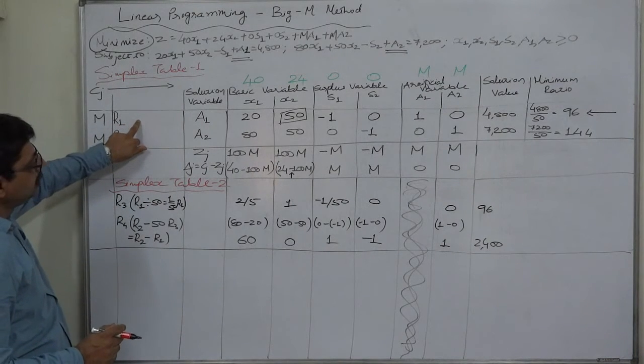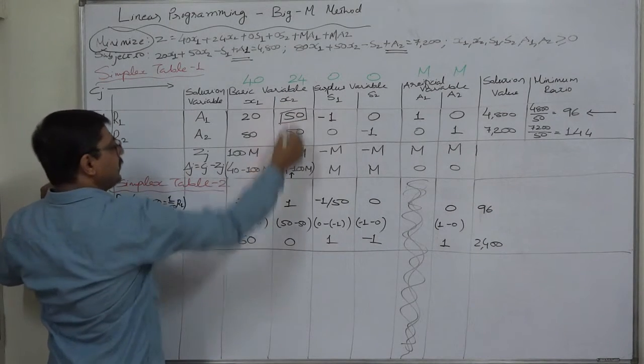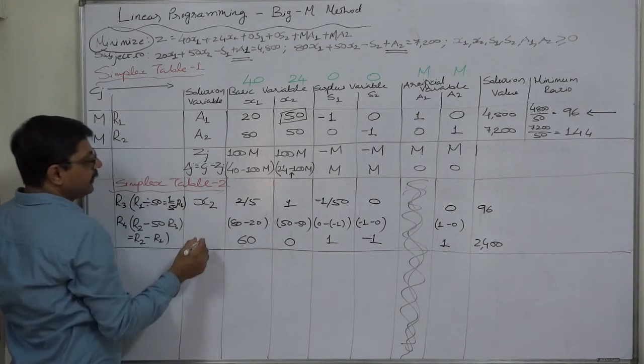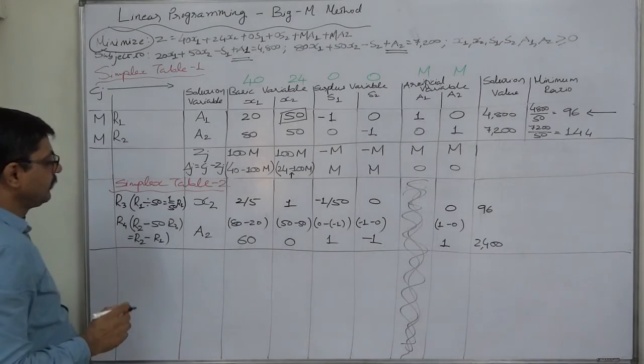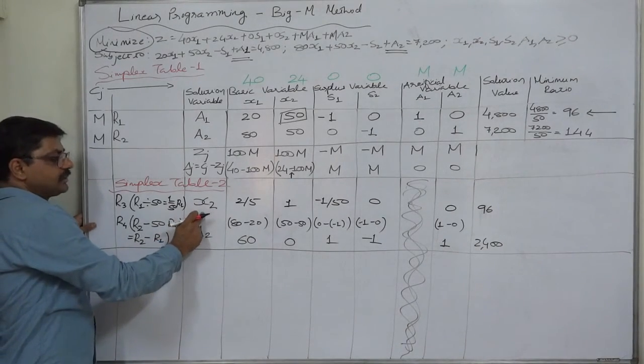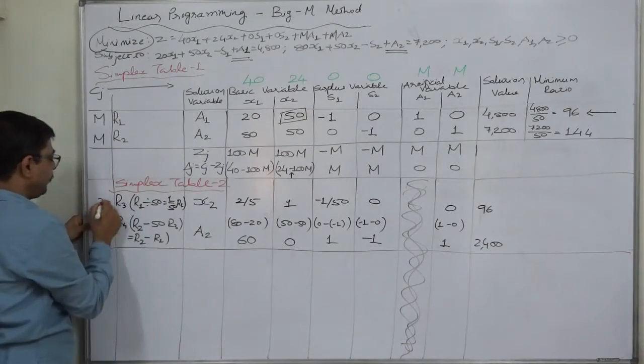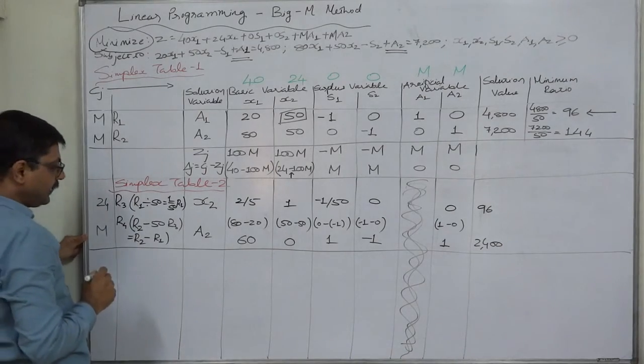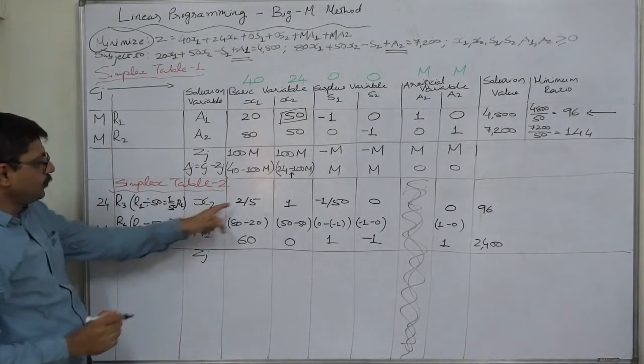So now we have all the two rows. Let us substitute the variables. Since r1 was the key row, we have to drop its variable in favor of the variable of the key column. So x2 will take the place of A1, and there will be no change in the variable of the second row. It will remain as A2. The coefficient of x2 in the objective function is 24, and that of A2 is M.